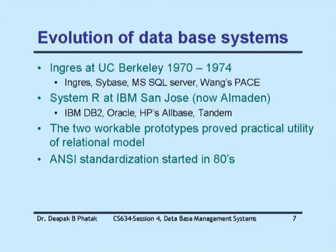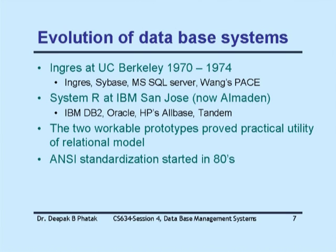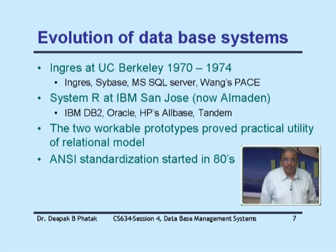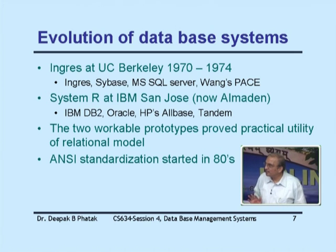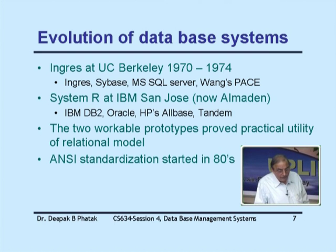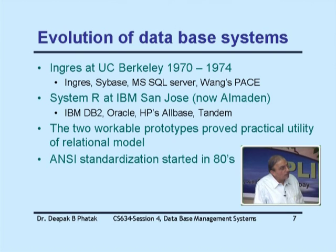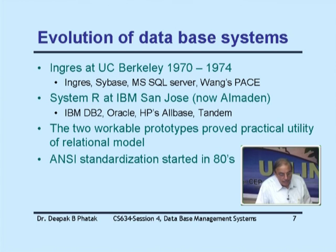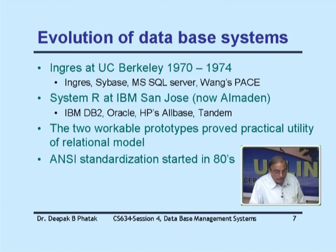The evolution from 1970 to 1974 continued using Codd's theory. Two parallel developments happened: System R at IBM San Jose, which resulted in the commercial product IBM DB2, and INGRES developed at the University of California at Berkeley. Technically INGRES was ready before System R was transformed into a commercial product, making it the world's first relational database management system. The two workable prototypes — INGRES and System R — proved the practical utility of the relational model for the first time.